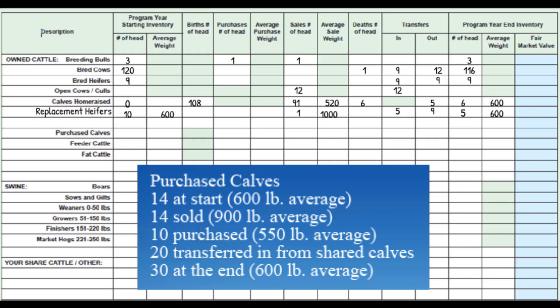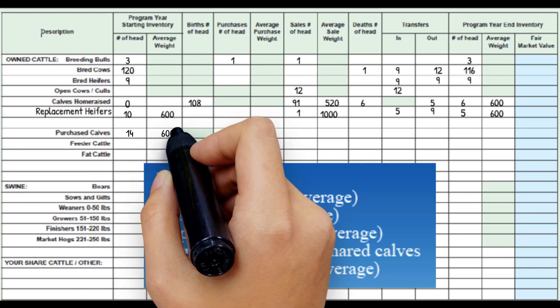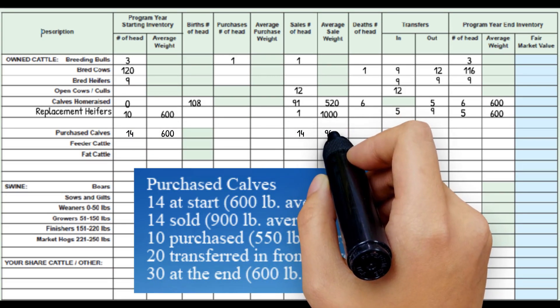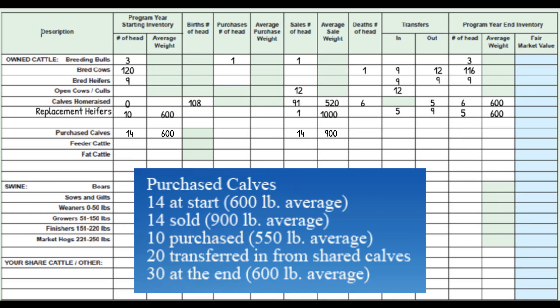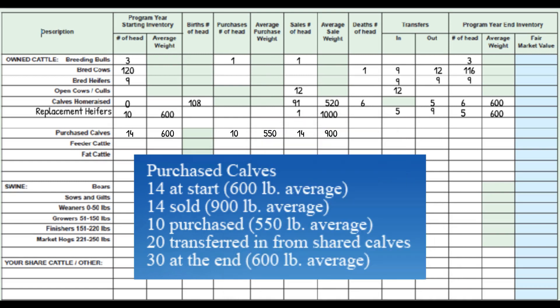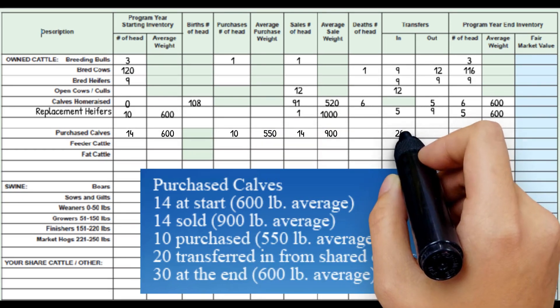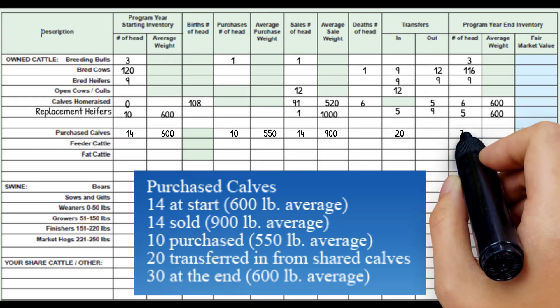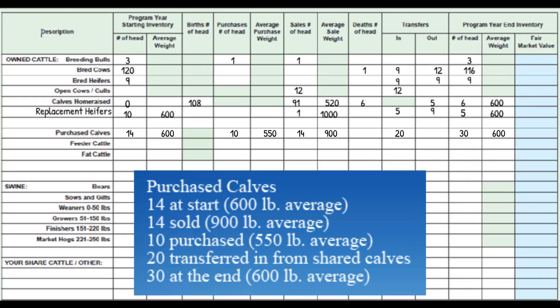Now looking at the purchase calves that Joe has. There are 14 at the start averaging 600 pounds. He sold 14 during the year at an average of 900 pounds. Joe purchased 10 at an average of 550 pounds each. Joe transferred in the 20 share calves he has. This makes the ending inventory for Joe of purchase calves 30 at the end averaging 600 pounds.